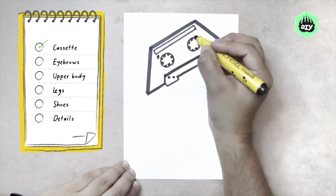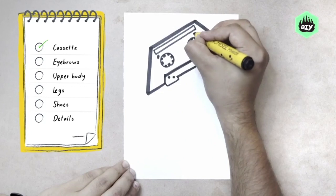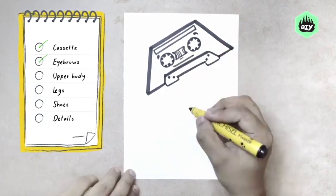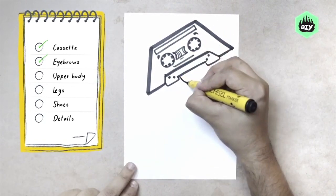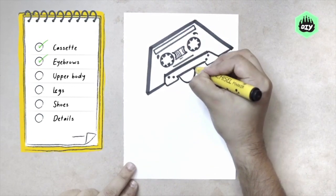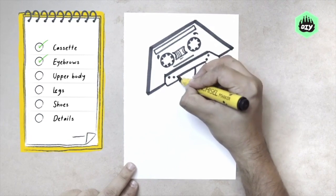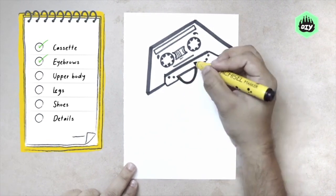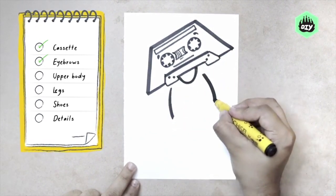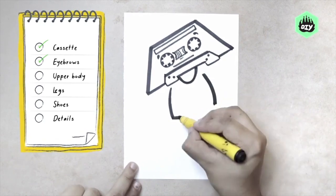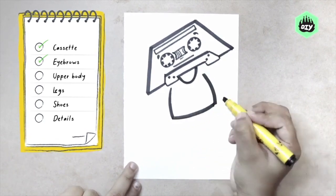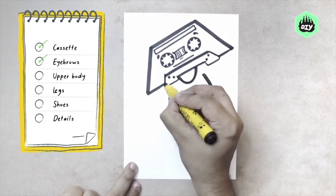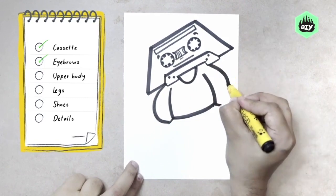To add a human element to it, we can add the eyebrows here. And now we can add a human-like body — the upper body with two lines going downwards, we join them, hands inside the pocket.